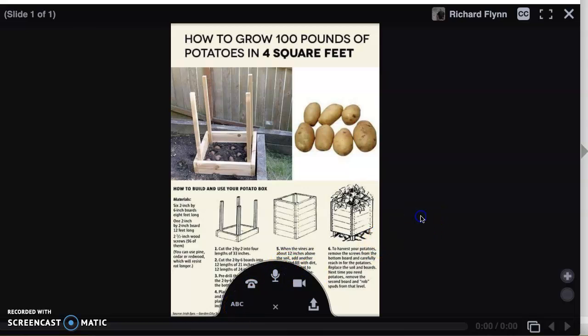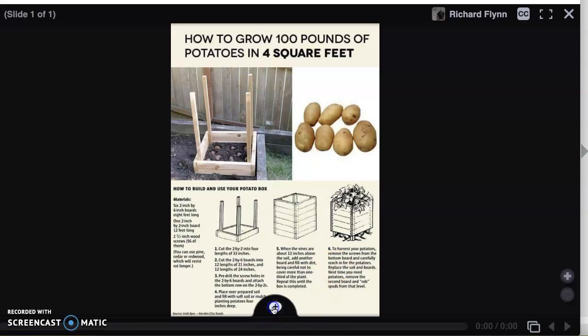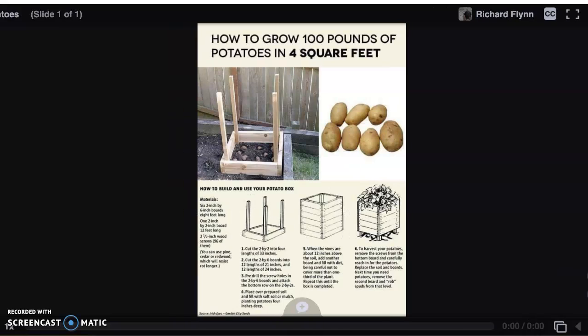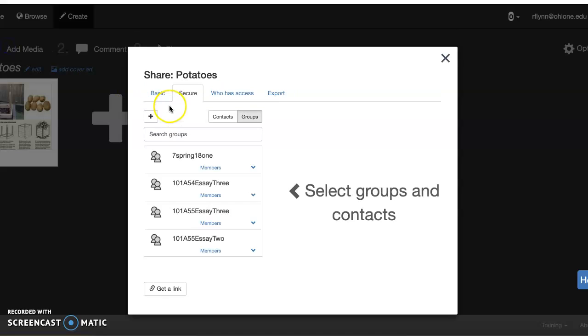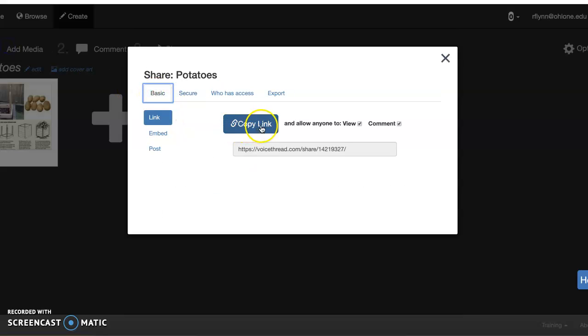So after you're done with the document, as we are right now, then you can save it. And then let me scroll on over here. And then after you've done that, click on share and then get your basic link. Copy that link and submit it into your assignment. It's that simple.